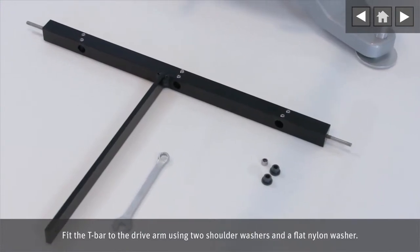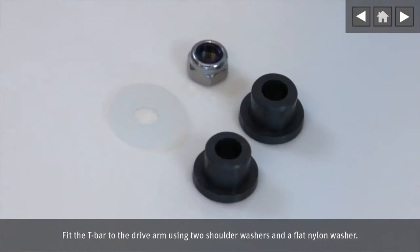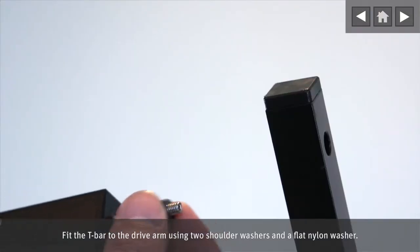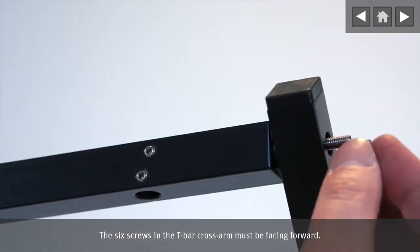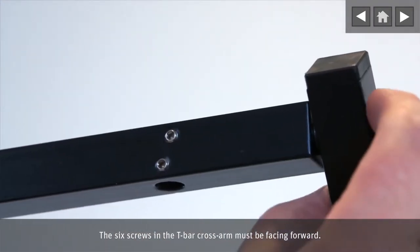Fit the T-bar to the drive arm using two shoulder washers and a flat nylon washer. The six screws in the T-bar cross arm must be facing forward.